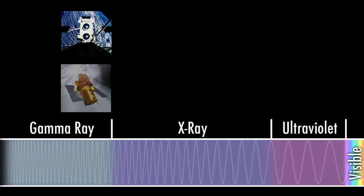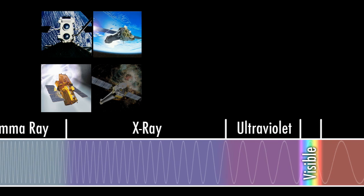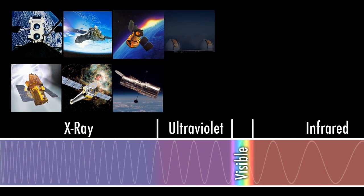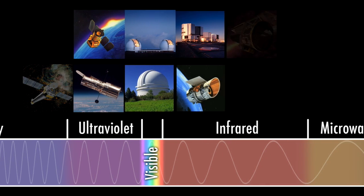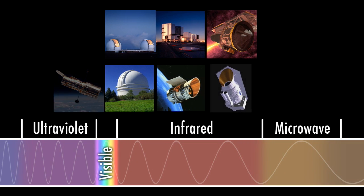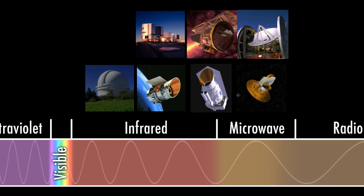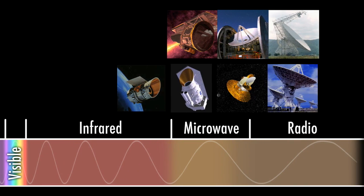In 400 years, technology has advanced almost as much as our understanding. Today, astronomers routinely scan the skies with spectacular telescopes, many of them seeing kinds of light that Galileo didn't even know existed.